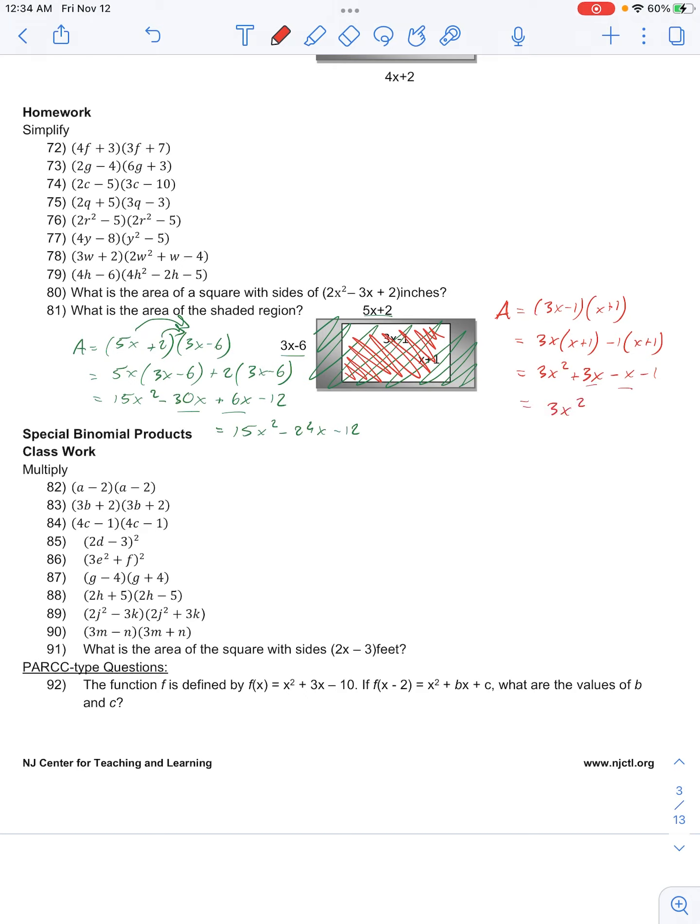Then combining like terms here we have 3x squared plus 2x minus 1. Now we said in the beginning that our area of the shaded region is equal to the larger area, area green, minus area red.